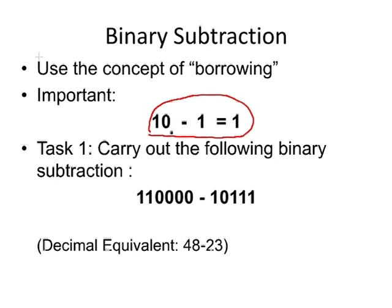Now, the first of two tasks is as follows: carry out the following binary subtraction. We're going to subtract from 110000 the number 10111. That is equivalent to 48 minus 23 in decimal.